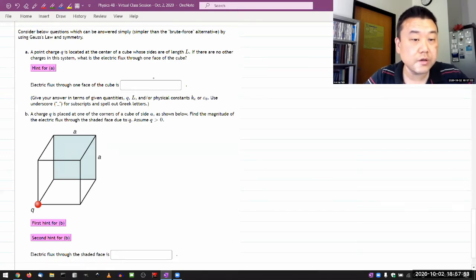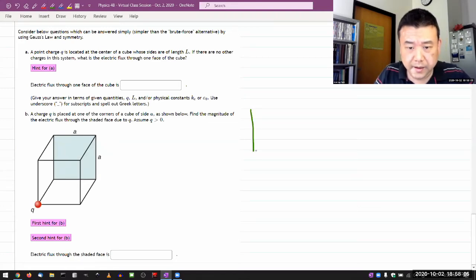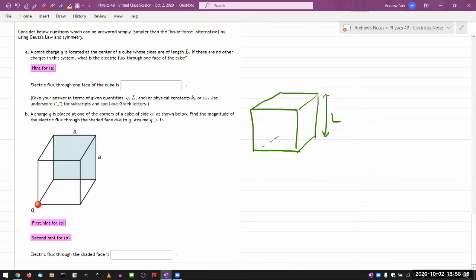It says a point-charge Q is located at the center of a cube whose lengths are of length L. That's not that cube there. So let me draw the cube that they are describing, which is a cube of length capital L. And it said the charge is located at the center of the cube. The challenges of representing three-dimensional things in two-dimensional, you have to imagine this is at the center of the cube. So there's like distance to the faces there. It's at the center-ish.